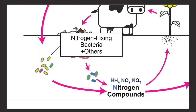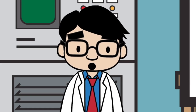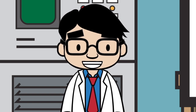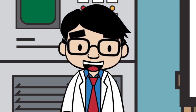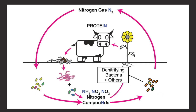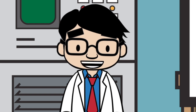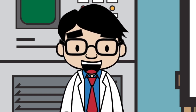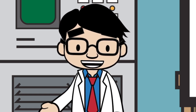On the left, we have our nitrogen-fixing bacteria — they're super important. These bacteria are one of the few that can take nitrogen gas from the air and turn it into nitrogen compounds. On the right, we have denitrifying bacteria, which are just the opposite: denitrifying bacteria turn nitrogen compounds back into nitrogen gas, which goes back into the atmosphere.